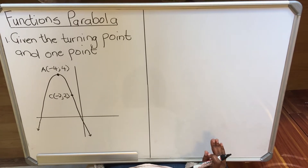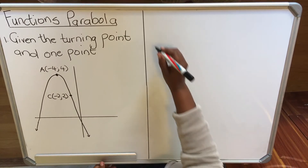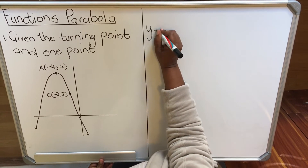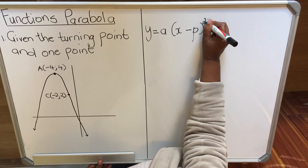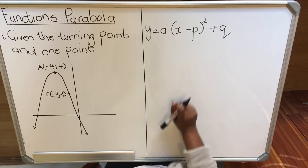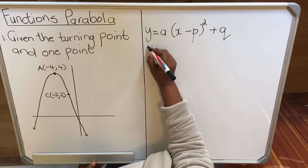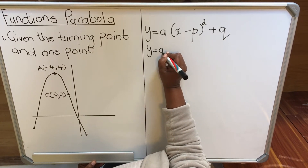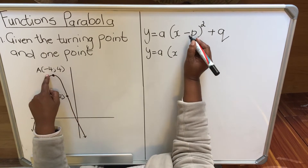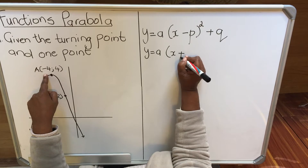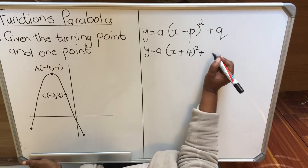If you are given a turning point, you're going to use the turning point method. The turning point method is y = a(x - p)² + q. The first thing that you do is substitute the turning point. So you're going to have y = a(x - p)², and my turning point is (-4, 4), so it becomes a(x + 4)² + 4.